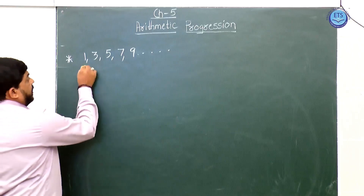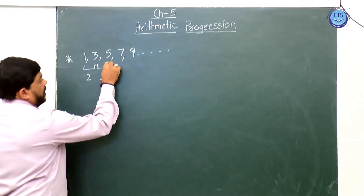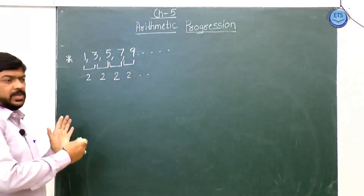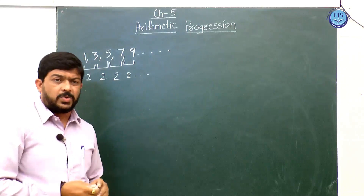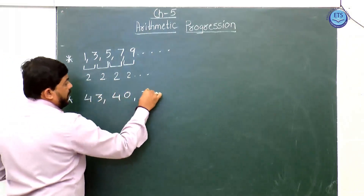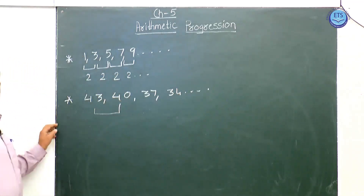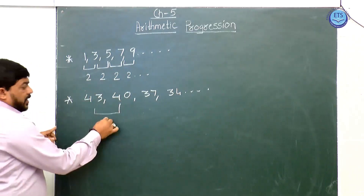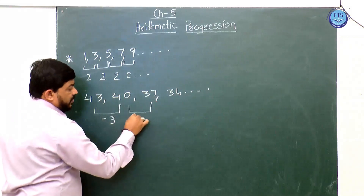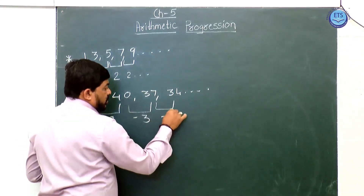You can see the difference between the first and second number is 2, between the third and fourth is also 2, and between the fourth and fifth is also 2. Every time the difference between two consecutive terms is 2. Taking another example: 43, 40, 37, 34 and so on. The difference between the first and second term is 3; as it is decreasing we say it is minus 3. Here also there is a decrease of 3, so that is minus 3 between the third and fourth term as well.